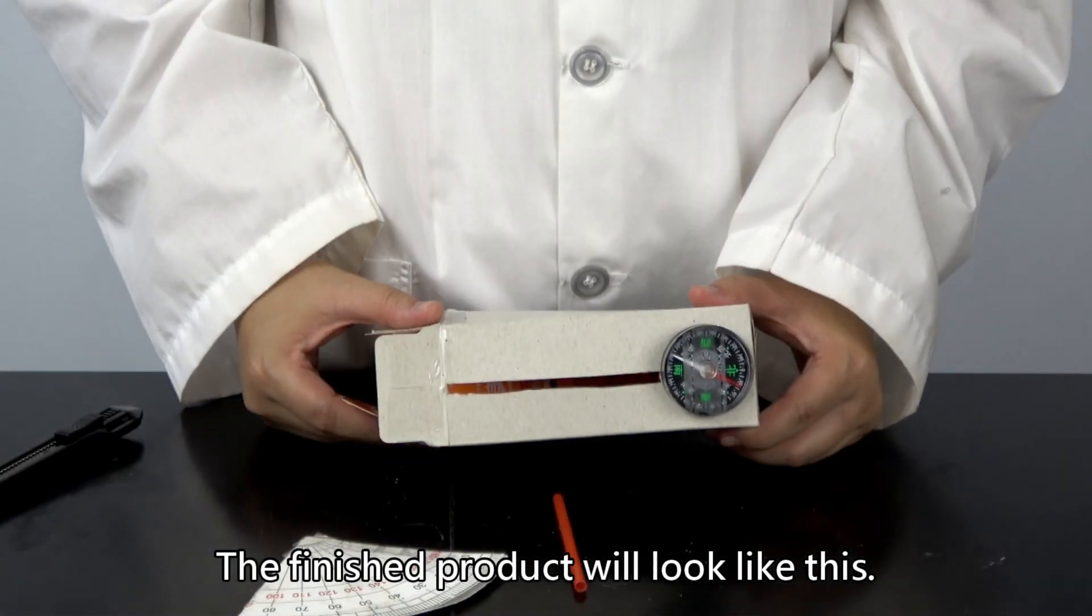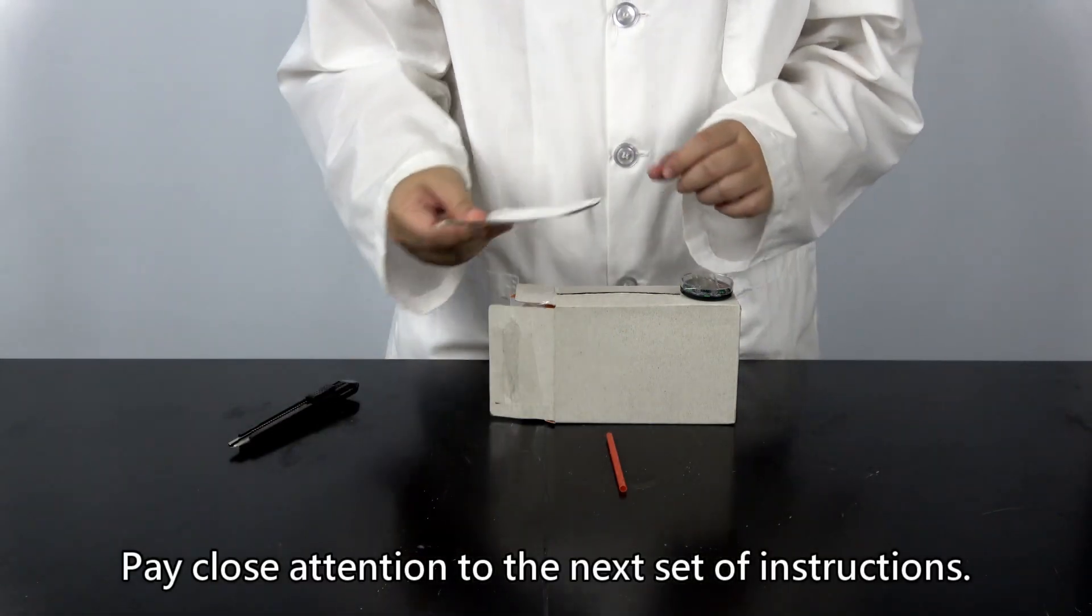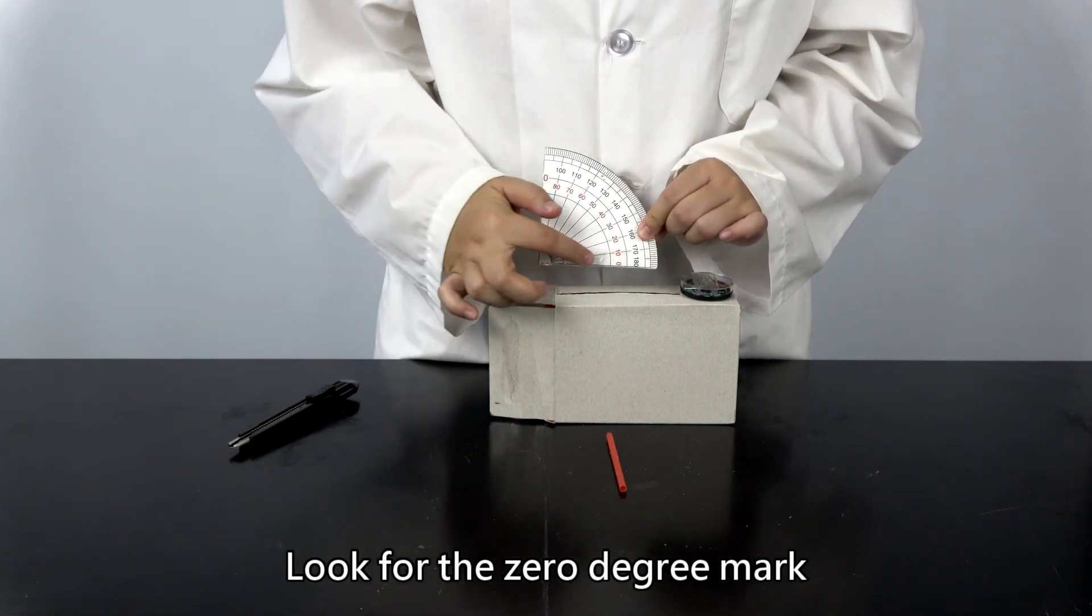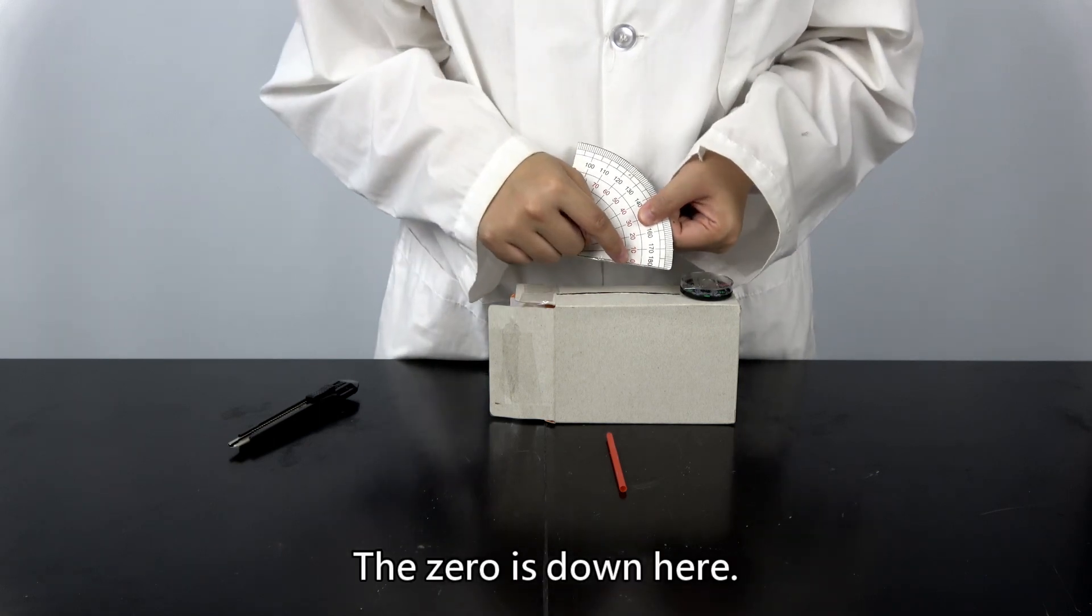The finished product will look like this. Pay close attention to the next set of instructions. Look for the zero degree mark using the numbers in red. The zero is down here.